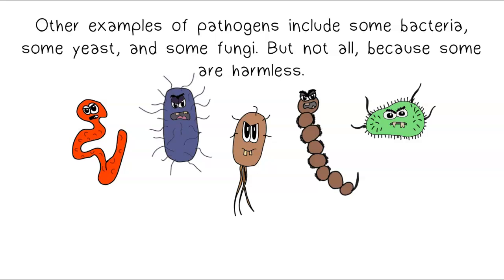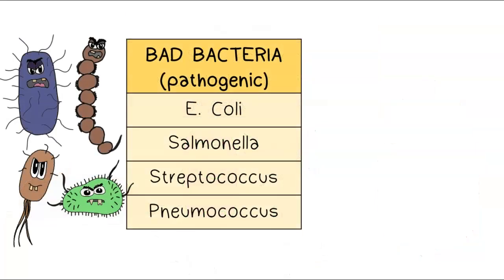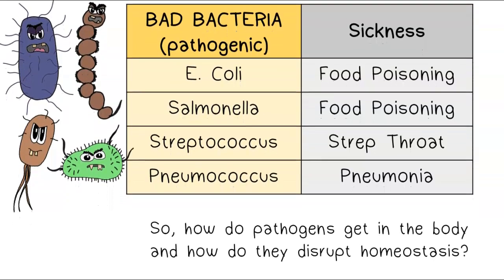Other examples of pathogens include some bacteria, some yeast, and some fungi — but not all, because some are harmless. There is even good bacteria, such as the decomposers in the soil and the bacteria that live in our own digestive system. Other bacteria is pathogenic; these bacteria cause sickness and disease.